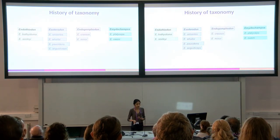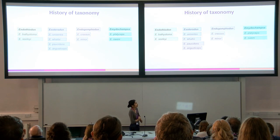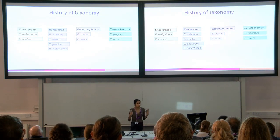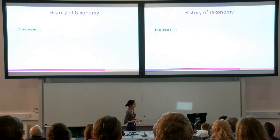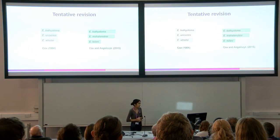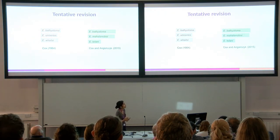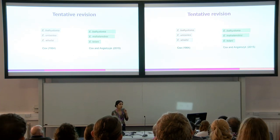The second problem with Endothiodon is its taxonomy. Since its first description, Endothiodon was broken up into many different species and the family into many different genera. This was revised by Cox in 1964, who suggested there were only three species — Endothiodon bathystoma, Endothiodon uniseries, and Endothiodon whaitsi — and that Endothiodon was essentially one genus.